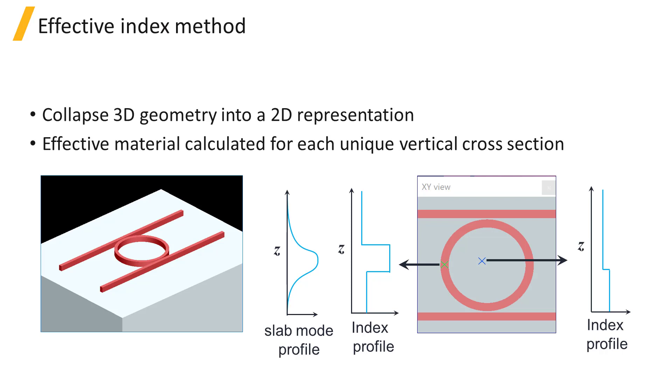The effective index method is used to collapse the 3D geometry into a 2D representation. When you run the simulation, the structure is meshed, and for each unique vertical cross-section of the device, an effective material is calculated from the vertical slab mode profile and the vertical material profile at that point. Once we have the effective 2D materials at each XY point in the simulation, we can run a 2D FDTD simulation.